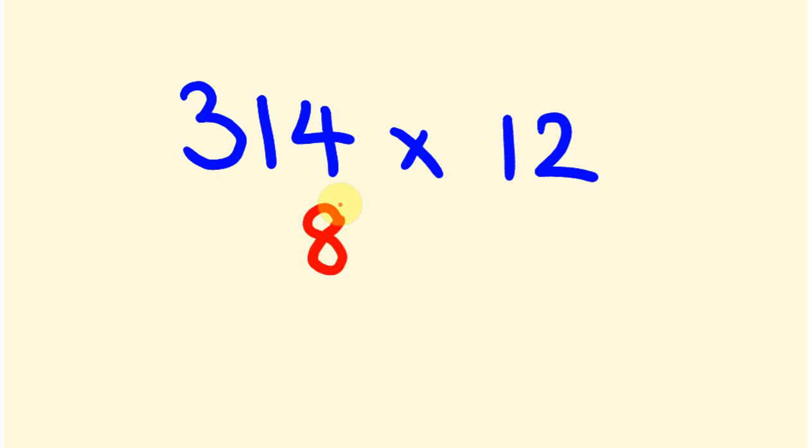The next thing we do is go to the next part. 1 doubled is 2, so we double that, we get 2 plus 4 is 6. Alright, next part of our answer, we double 3, we get 6 plus 1 is 7.